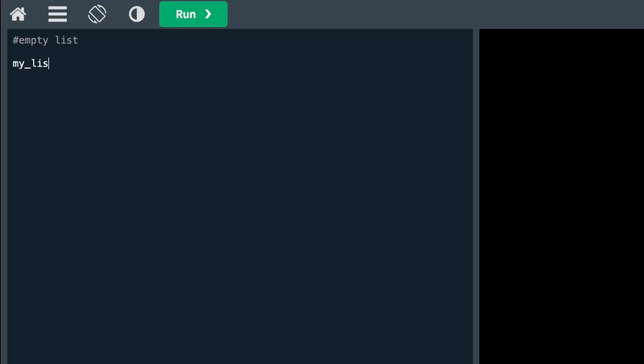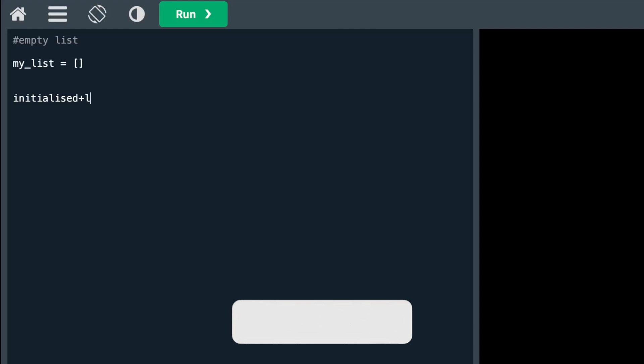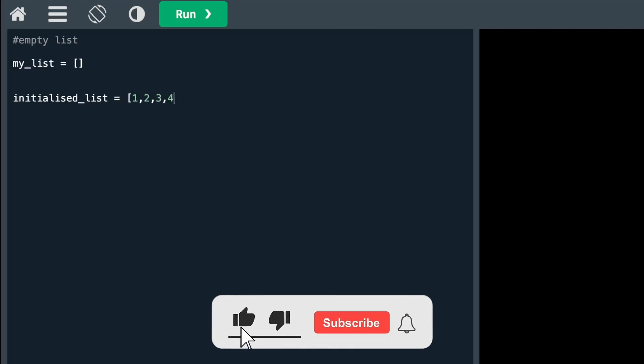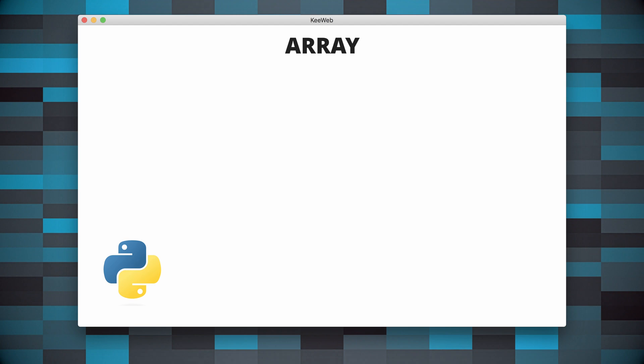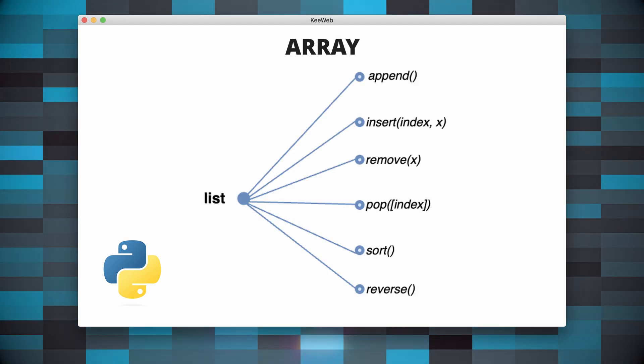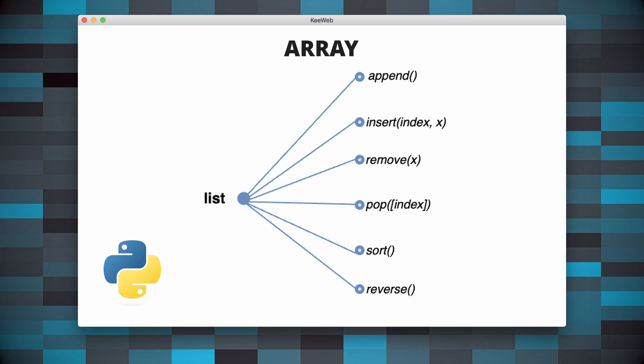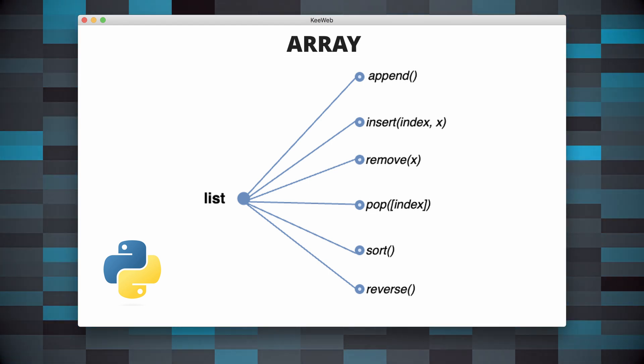Let's say we want to create an empty list. We can simply do the following. If instead we want to create an already initialized list, we could do it in the following way. To access a list using an index, we can simply put the index in the square brackets. Python lists have some useful methods that are gonna be handy during LeetCode questions.